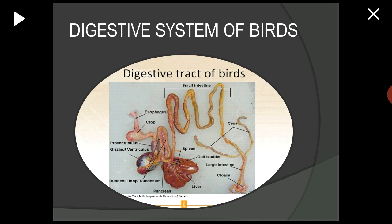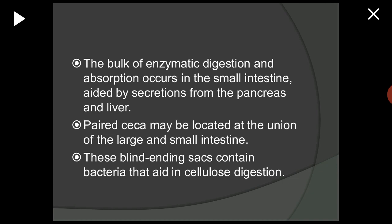The digestive organs include the ventriculus or gizzard, the duodenal loop and duodenum, pancreas, liver, spleen, gallbladder, large intestine, cloaca, caeca, and small intestine. The bulk of enzymatic digestion and absorption occurs in the small intestine, aided by secretions from the pancreas and liver. Paired caeca may be located at the union of the large and small intestine; these blind-ending sacs contain bacteria that aid in cellulose digestion.